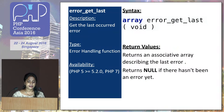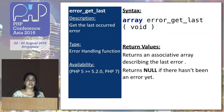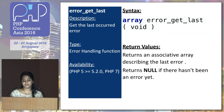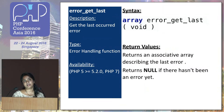Next is error_get_last. This is also a very common function used to get the last occurred error. It's an error handling function, available in PHP 5.2 and greater. It returns an associative array representing the last error, or null if there hasn't been an error yet. The array that it returns will have type, message, line, and file as keys.